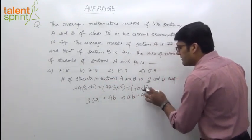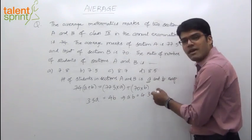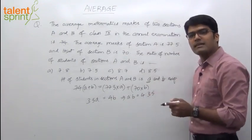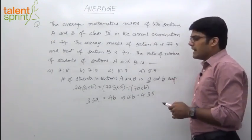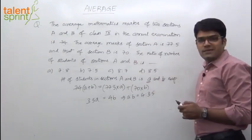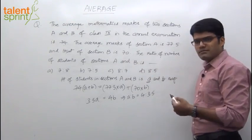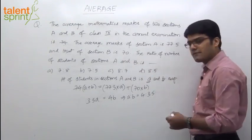But you know that having fractional values in ratio is not the right format. Ratio should always have integers in it. And even if you look at the options 7 is to 8, 7 is to 5, 8 is to 7 and 8 is to 5, it does not matter. So let's get it in the right format.